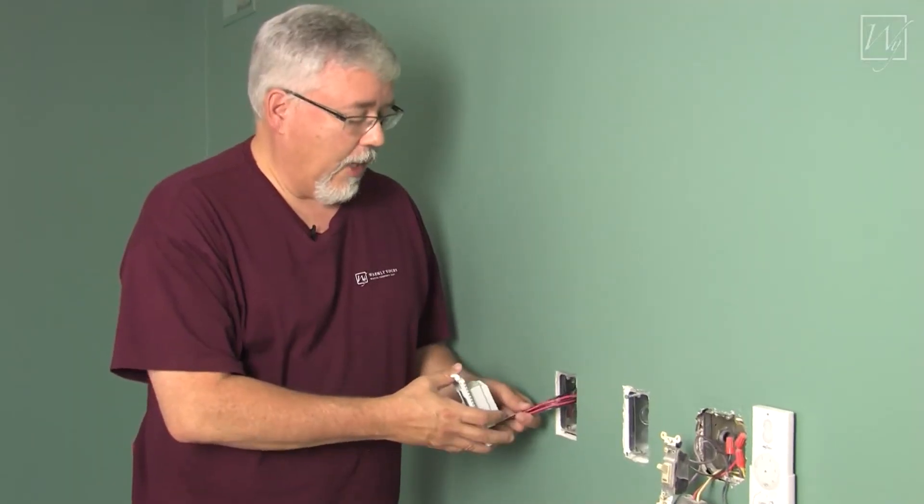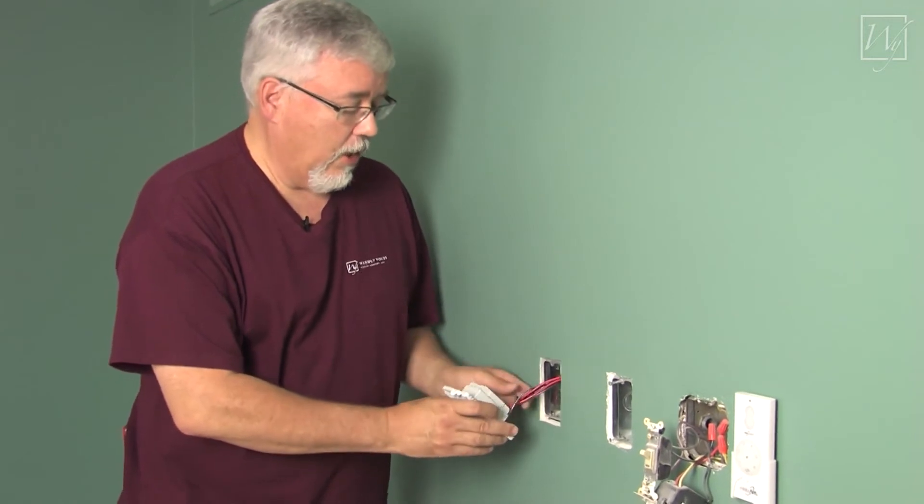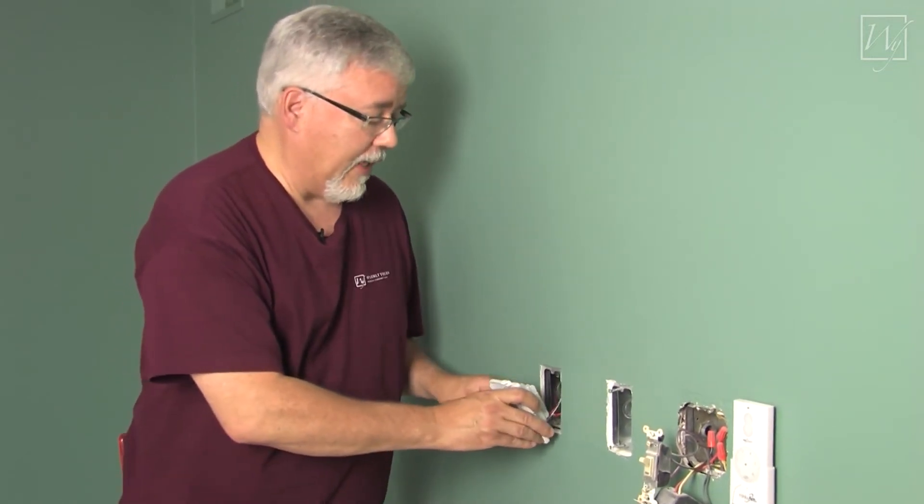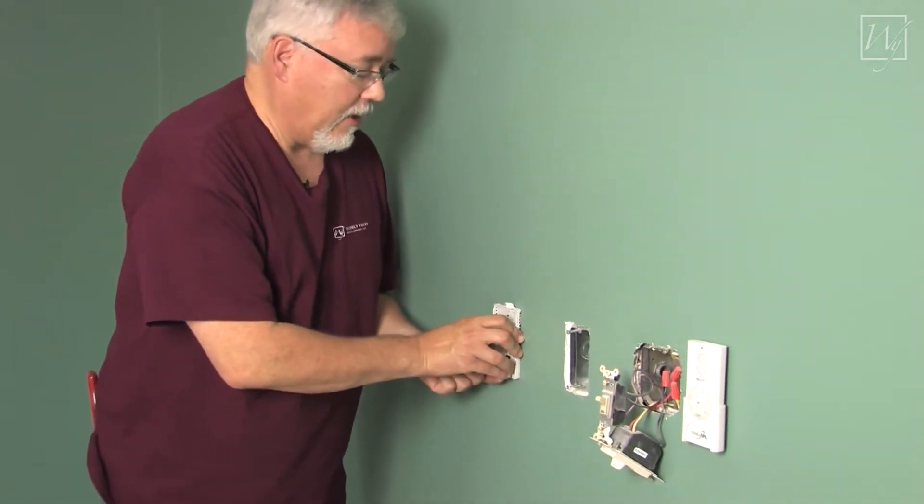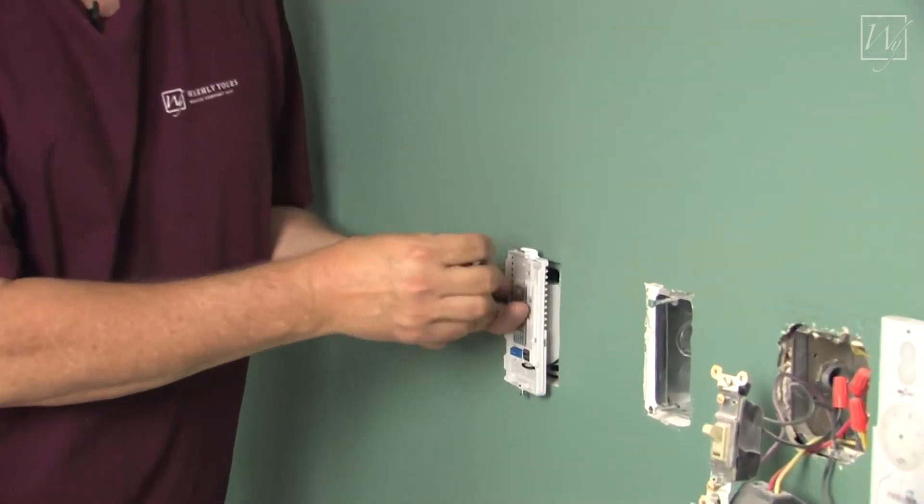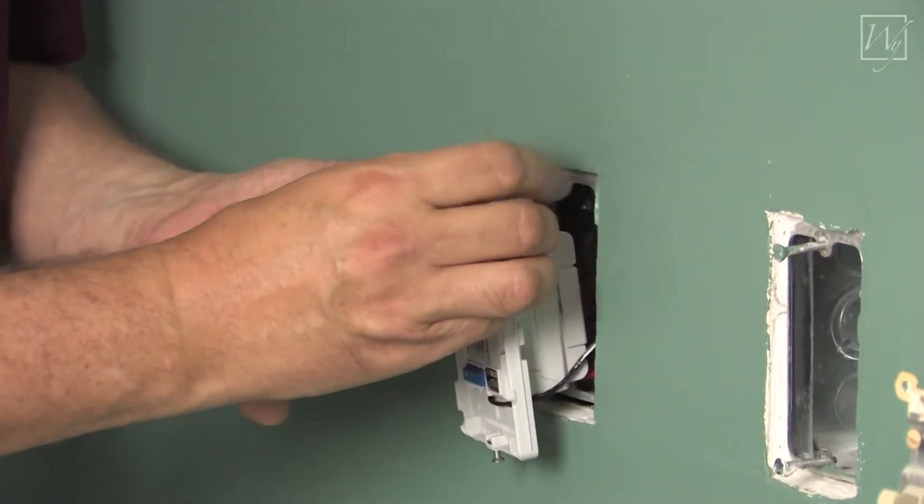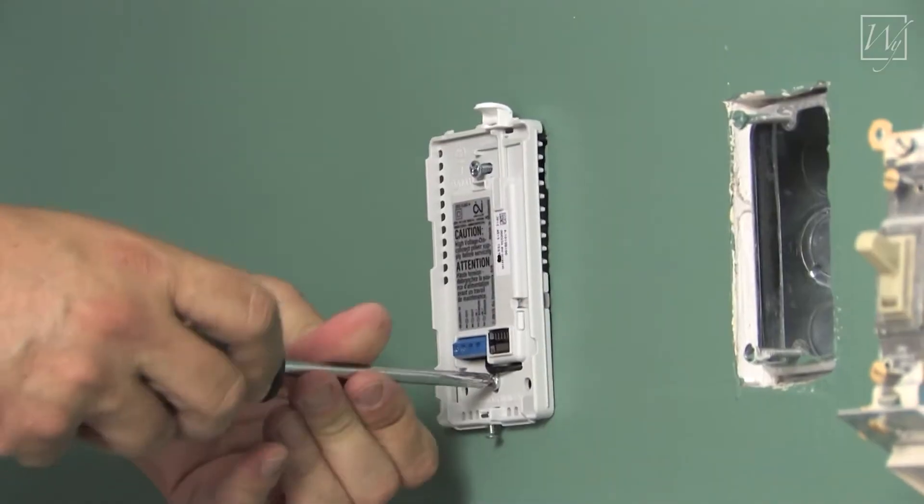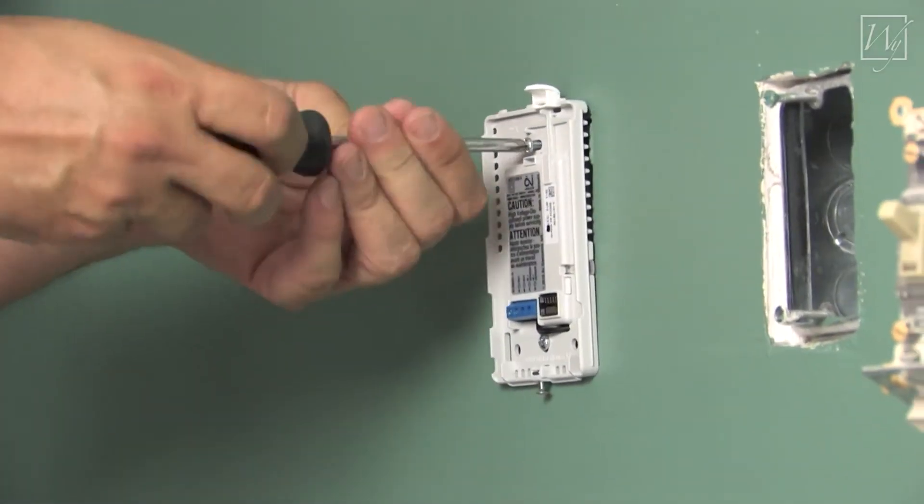Now we're ready to go ahead and put our system into the wall. We've got all of our wires connected here at the base, so we're going to make sure that we put that in there as it shows. And we're going to take these two screws that are supplied in the box, and we're going to get them started in the thermostat box.